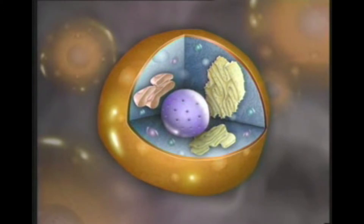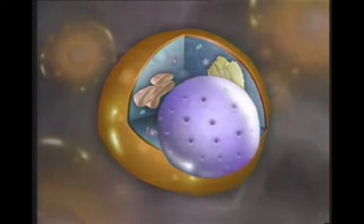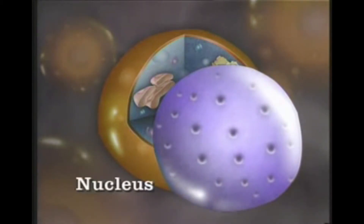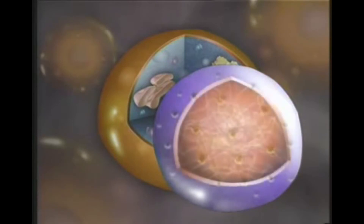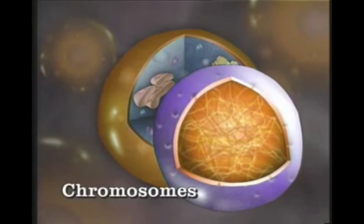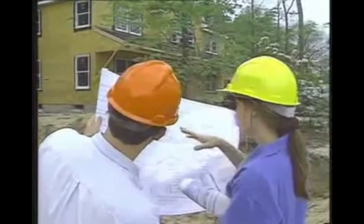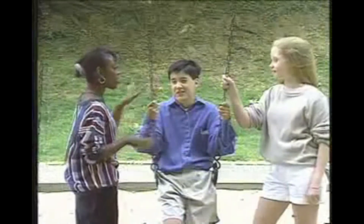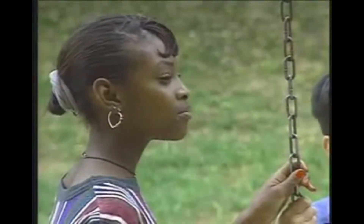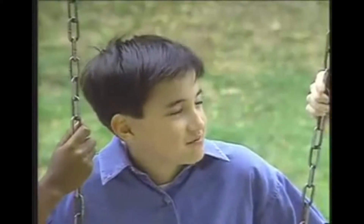Inside the cell membrane are many different structures called organelles, which literally means little organs. One organelle, the nucleus, is the control center of the cell. It has a membrane with pores allowing certain molecules to enter or leave. Inside the nucleus is fiber-like material called chromosomes, which contain the cell's genetic information — like an architect's blueprint — determining how proteins are assembled, influencing physical features such as hair color, eye color, nose shape, and susceptibility to certain diseases.